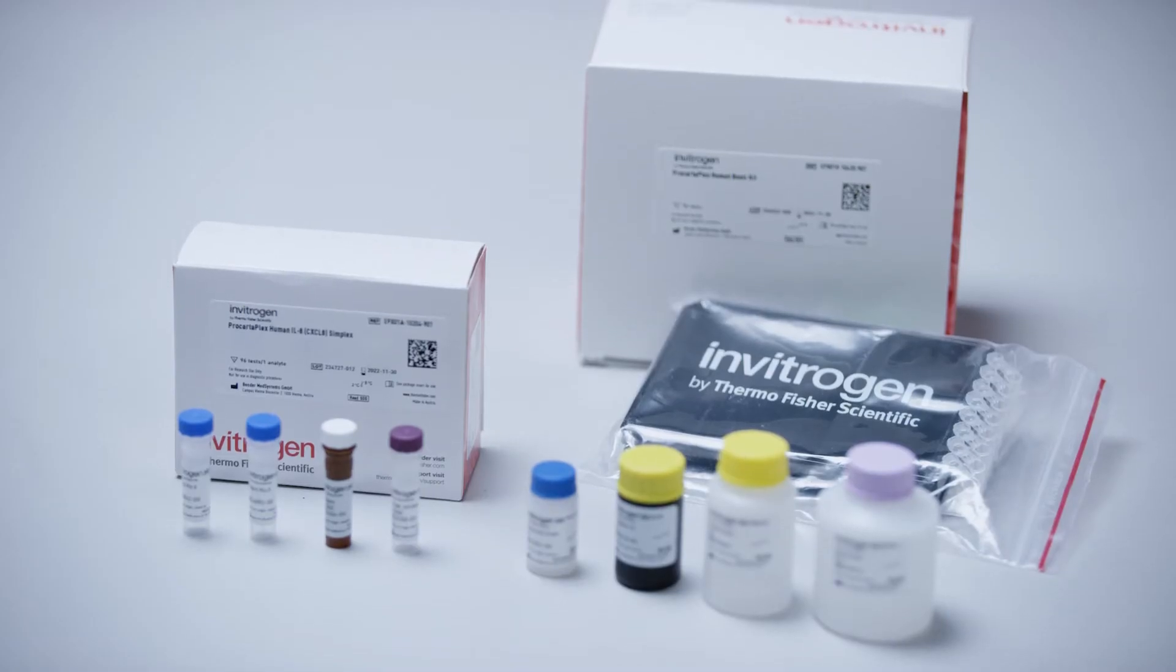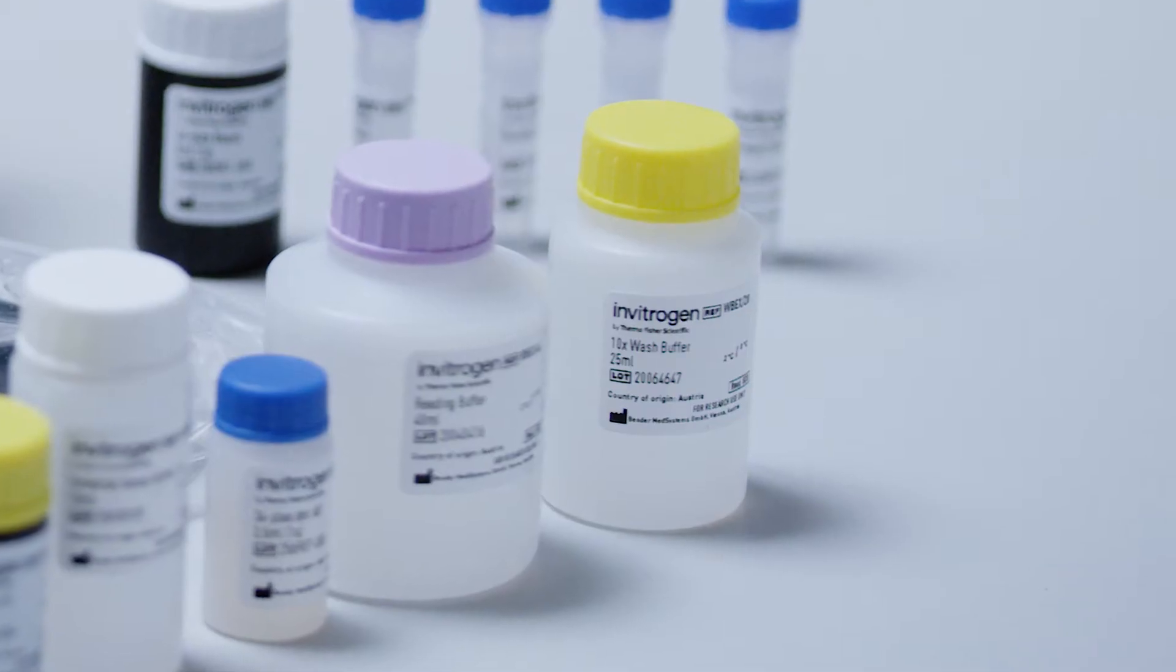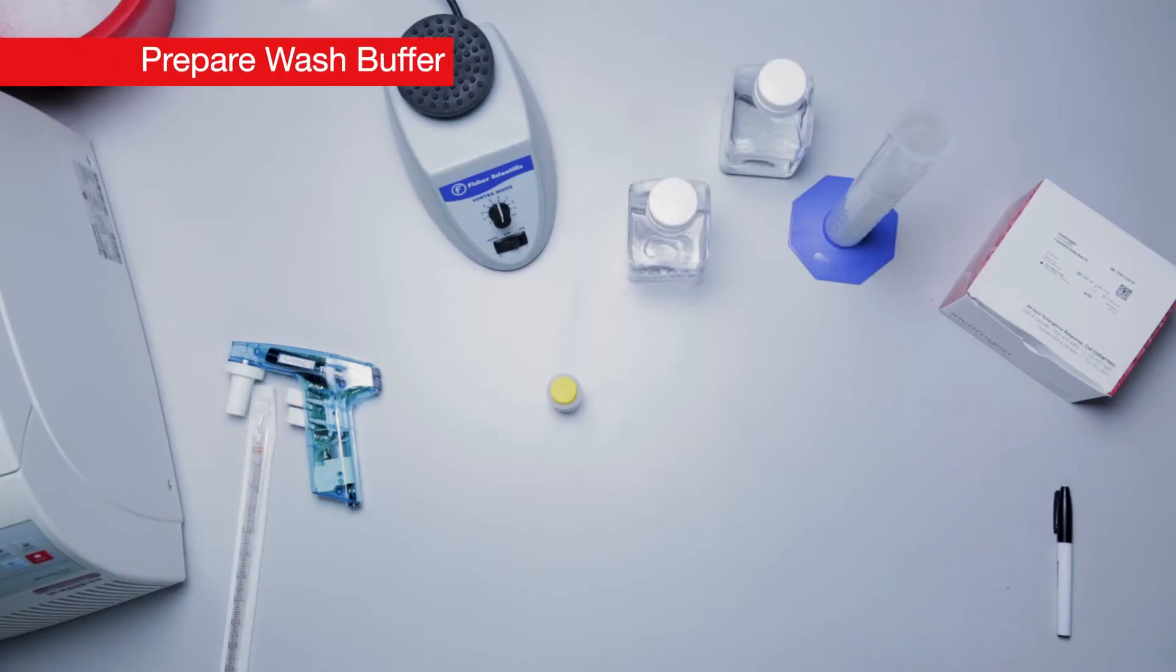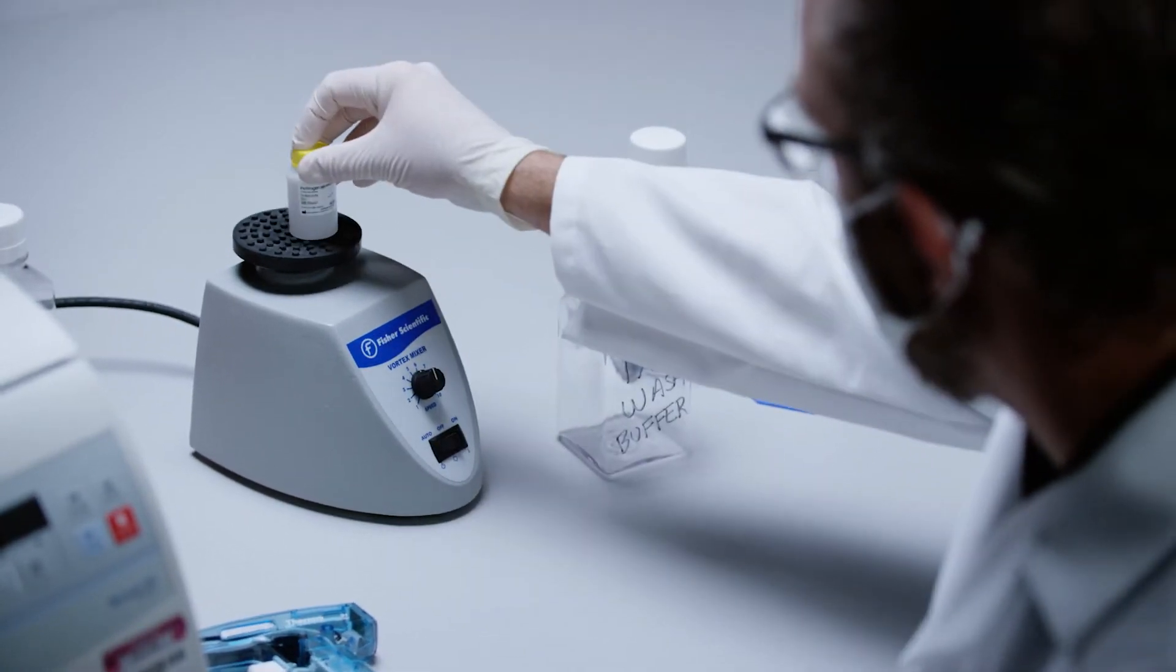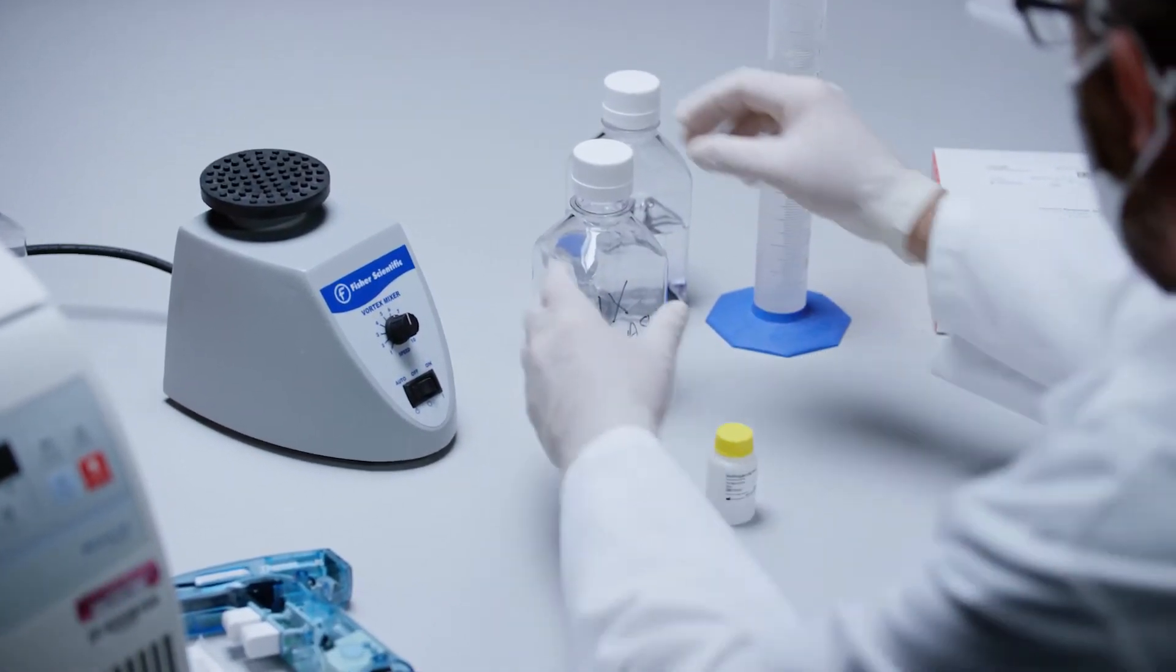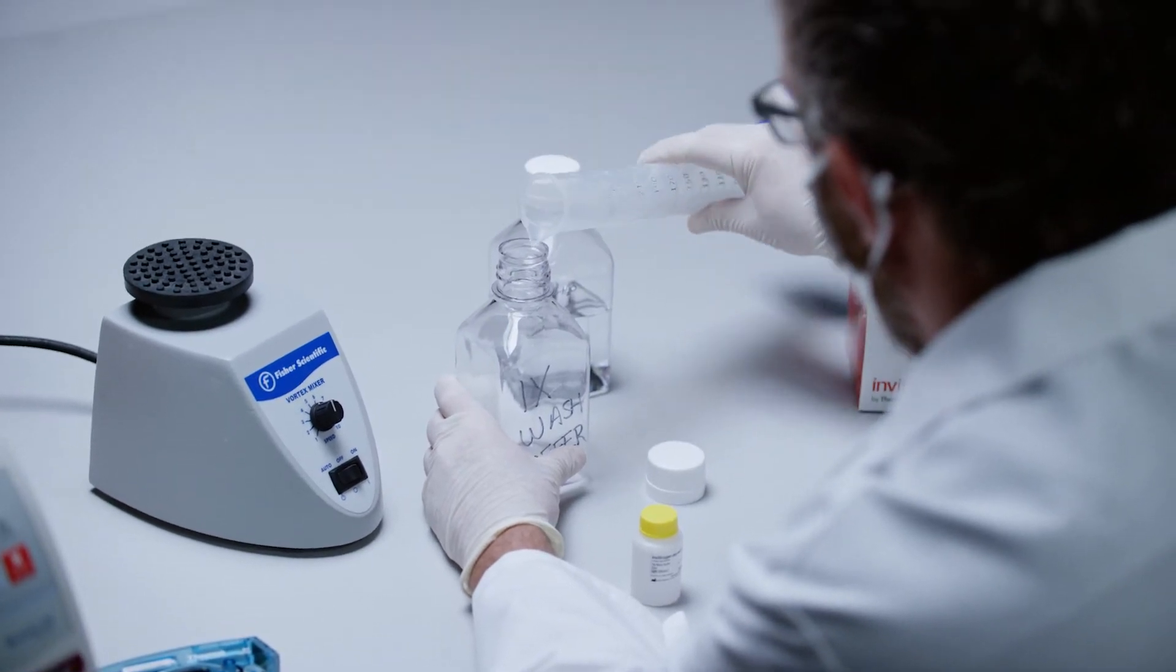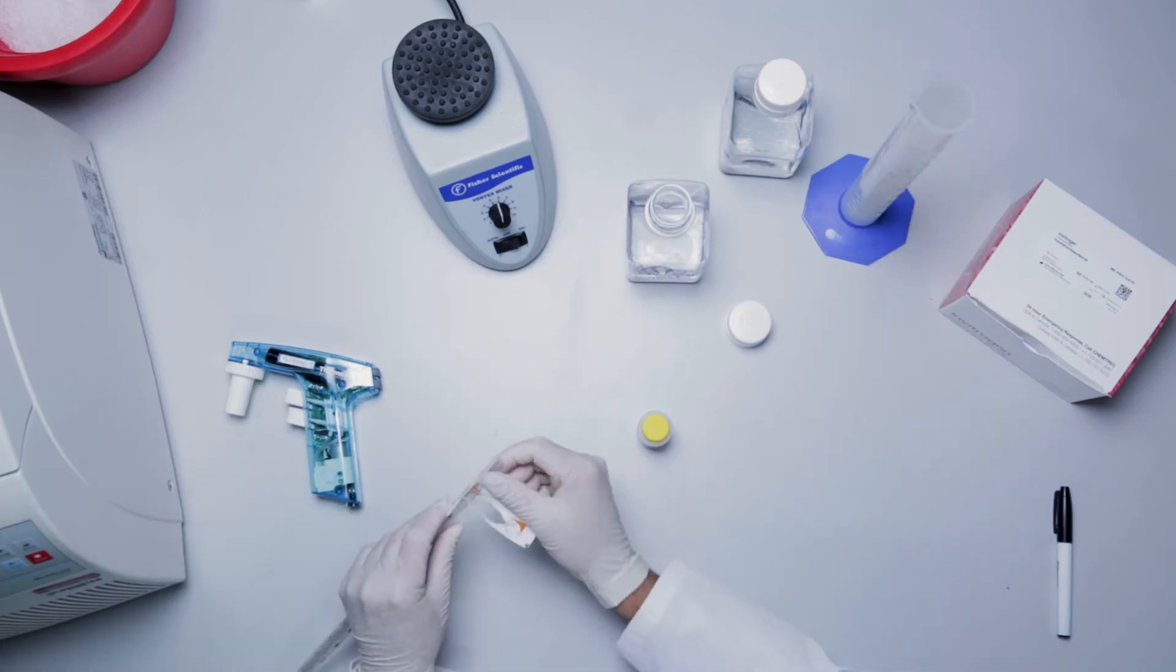Before you begin, bring all assay components to room temperature. Continue by first preparing the wash buffer. Wash buffer is provided as a 10x stock solution. Gently vortex the wash buffer concentrate for 15 seconds. Mix 20 milliliters of wash buffer concentrate with 180 milliliters of deionized water using a 200 milliliter graduated cylinder.